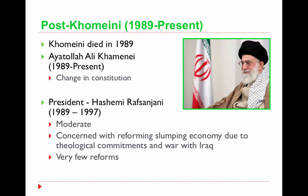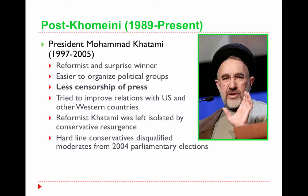Post-Khomeini, one of the most significant presidents was Hashimi Rafsanjani, a moderate who brought about very few reforms and was forced to deal with a slumping economy due to the war in Iraq. From 1997 to 2005, the president was Mohamed Khatami, a reformist and surprise winner who received support from women, university students, and young adults. He censored the press less than previous leaders and tried to improve relations with the United States and other Western countries, but ended up somewhat isolated by a resurgence of conservatives.